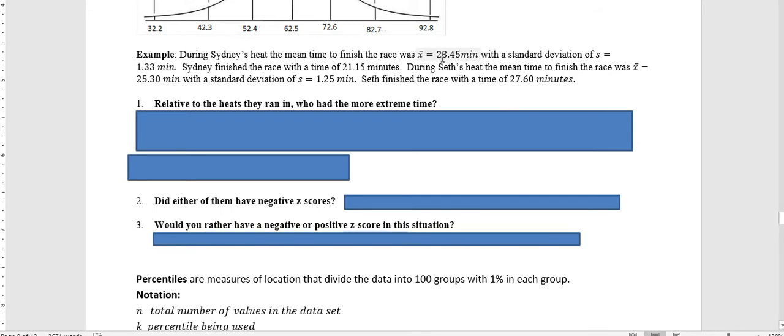The mean time in Sydney's race was 23.45 and she finished in 21.15, so she was below the mean and would have a negative z-score. Seth was running in a race that had an average of 25.3 and Seth finished in 27.6. Seth was higher than the mean, so his z-score should be positive. Sydney's should be negative, and that's what we're going to discover.